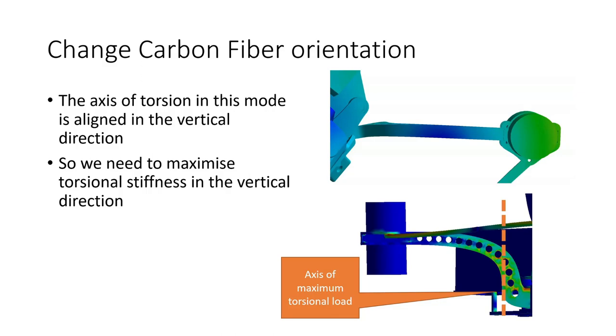So the first thing to try is to remove these holes and avoid weakening the arm in the most critical most stressed location for this vibrational mode. But that's not the only thing that we can try. The nature of carbon fiber is that it's an anisotropic material which means that its strength and stiffness is really dependent on the direction in which you load it. And what we can see from this mode is that the axis of torsion that's really critical is in the vertical direction. So we need to maximize the torsional stiffness of the arm in that direction so that it's most able to resist that load. And in order to maximize that torsional stiffness in a particular direction we need to consider the carbon fiber layup direction of the arm the anisotropy of the carbon fiber material itself.